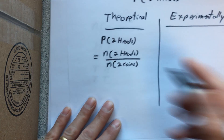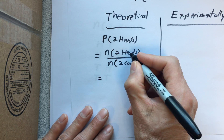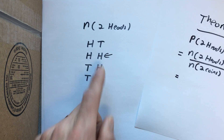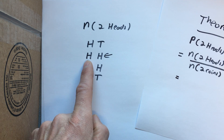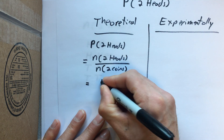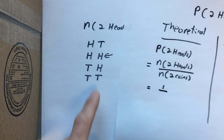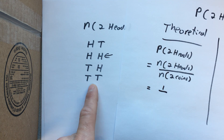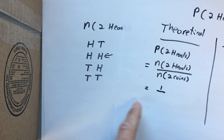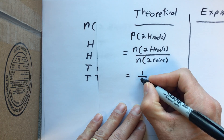So our numerator — the number of ways we could have two heads — is one. And the denominator — the number of ways things could end up when we throw two coins — is four. So the theoretical probability of two heads is one-quarter.